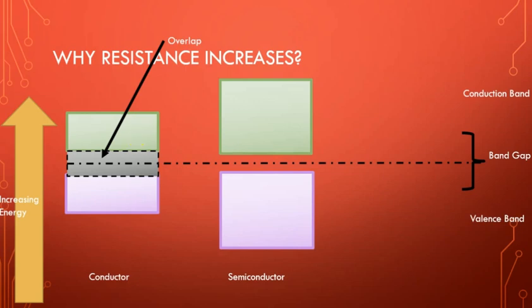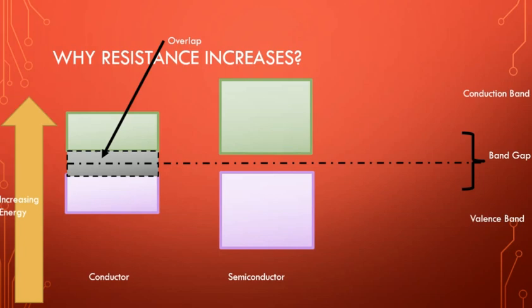In the case of a semiconductor, the scenario is similar, but the difference is that the gap between the valence band and conduction band is small — they don't overlap each other. Due to this gap, it takes a bit more time than conductors for the conduction band to become crowded. Resistance increases as temperature is increased, and decreases as temperature is decreased.